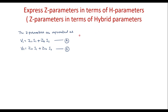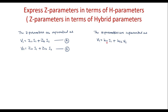Let me write the hybrid parameter equations. The H parameters are represented as V1 is equal to H11·I1 plus H12·V2 — I will call this equation C — and I2 is equal to H21·I1 plus H22·V2 — I will call this equation D.